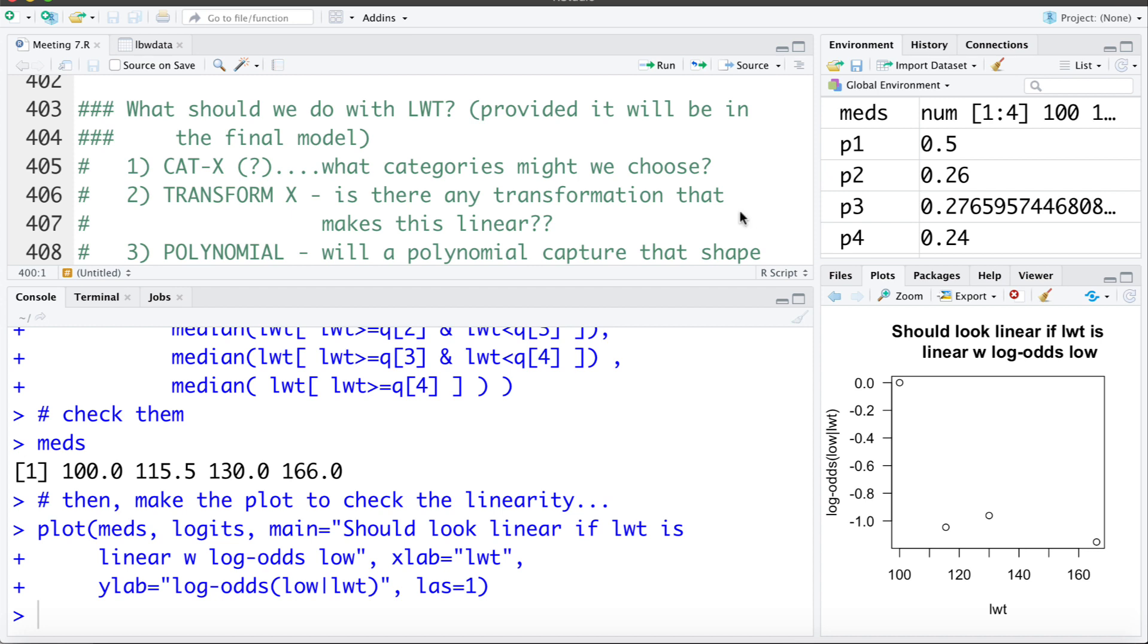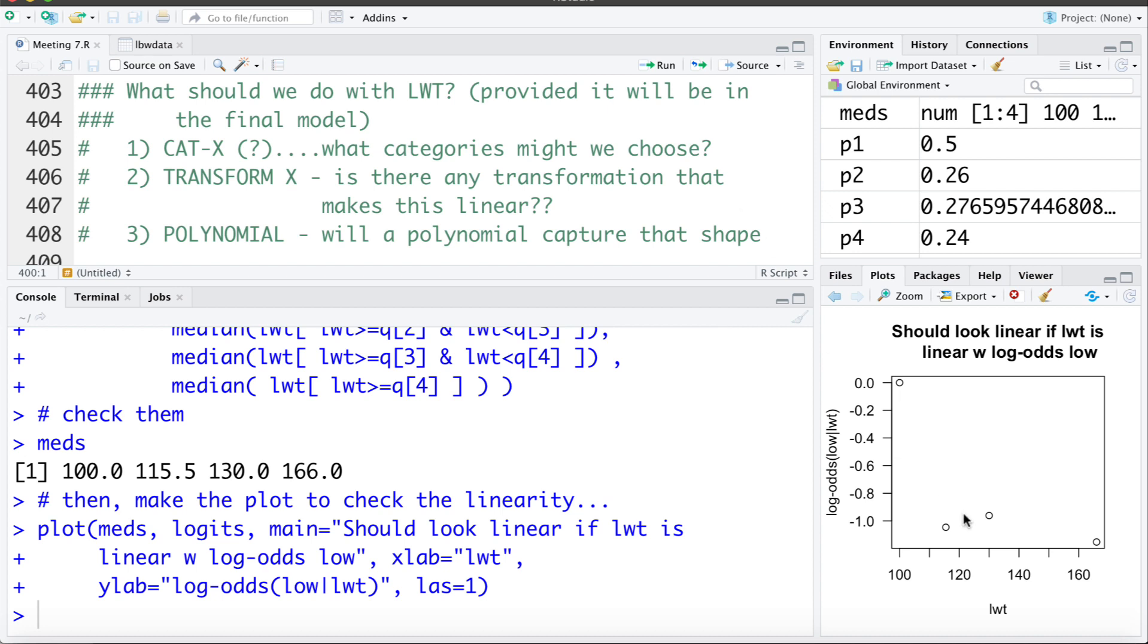Other options that we've learned are we can try transforming x, transforming LWT. Is there any transformation that's going to make this look linear? I don't really think so but that's an option that you could explore. We also learned fitting polynomials right. We could try and fit a polynomial through this rather than a line. So say using LWT and LWT squared in the model. And again that's not really going to work for us right. We can imagine there's not really a polynomial that's going to fit through these very well. And that's because the relationship is not linear. And it looks more like there's some high risk threshold, that above 110 the risk is all roughly the same. Once we get below 110 the risk seems to shoot up.